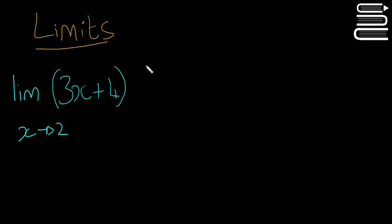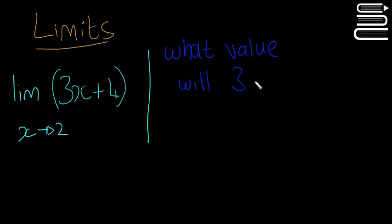What you'll get is something like this: 3x plus 4. You'll be asked to find its limit. That'll look like this: limit as x goes to 2. What does that mean? That means what value will 3x plus 4 approach as x goes to 2.